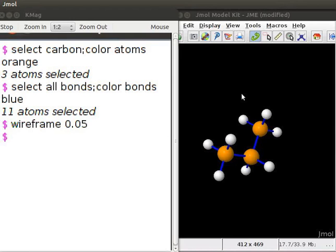Similarly, to increase the size of the bonds, at the prompt, type wireframe 0.1. Once again, note the change in the size of the bonds.